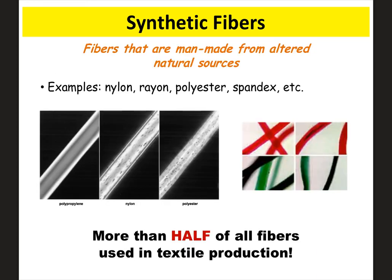Synthetic fibers are the second type — they are man-made fibers. Examples include nylon, rayon, polyester, and spandex, and they make up a large portion of all fibers produced. Under the microscope, synthetic fibers look very uniform and perfect because they were manufactured, whereas natural fibers from plants or animals don't look as perfect.